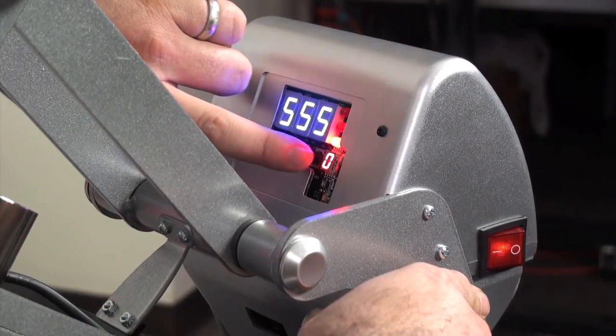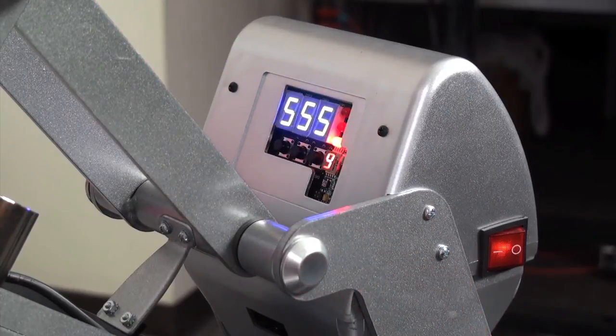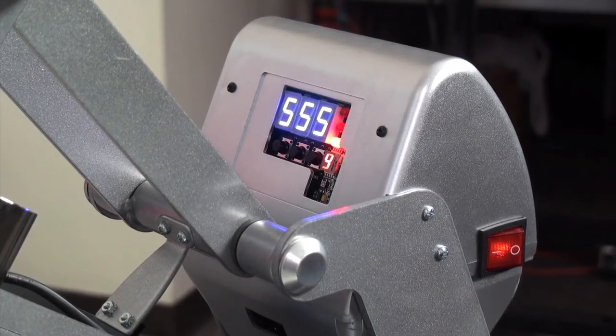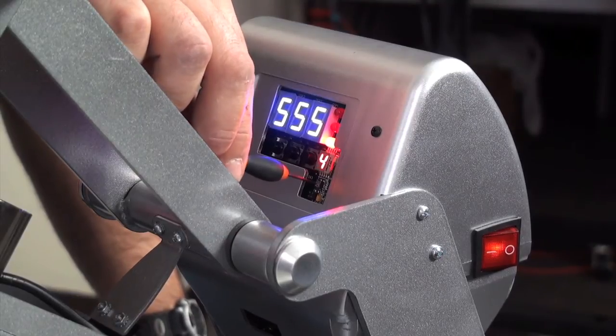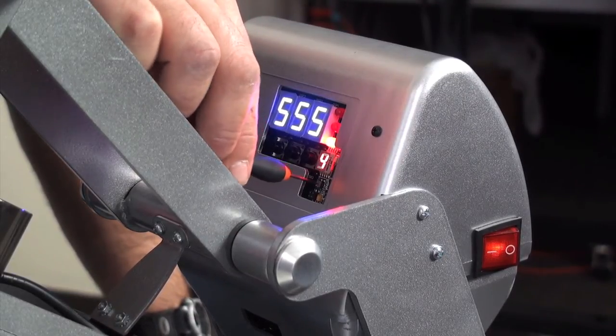Press the plus button once. The pressure display will show a number between 1 and 9. Turn the small screw below the pressure display gently to the left or right until a zero is obtained.